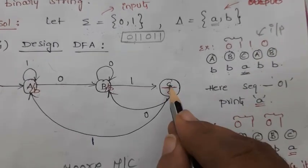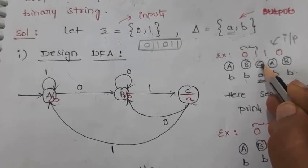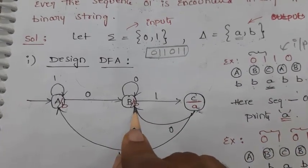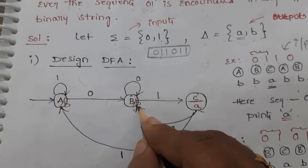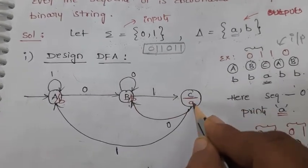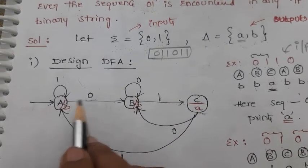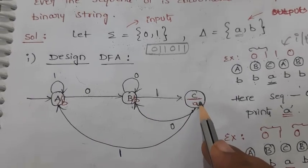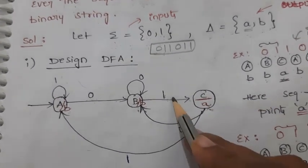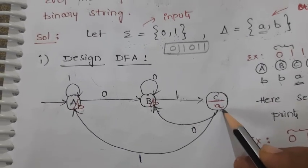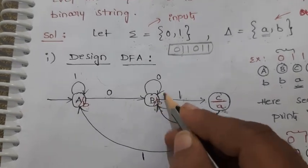Now we are at state C. There are two possibilities: input 0 or input 1. If the input is 0, it is diverted to state B. The reason is that after this 0, there may be a chance of getting 1. If 1 comes, it should move to C, and we get output A. So for the 0,1 sub-sequence, output A is produced.